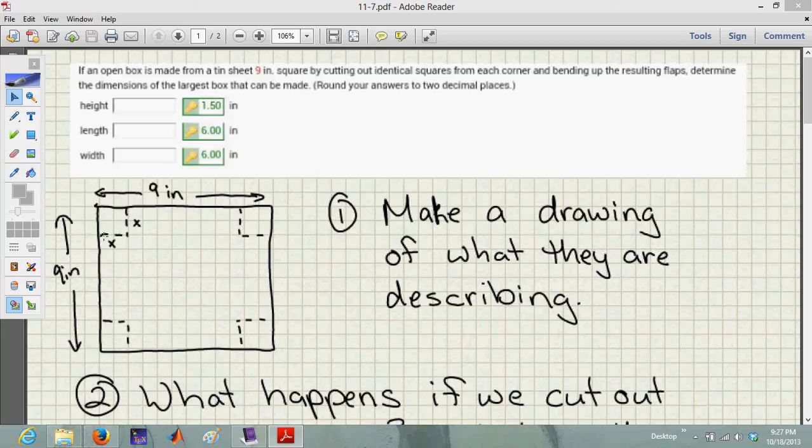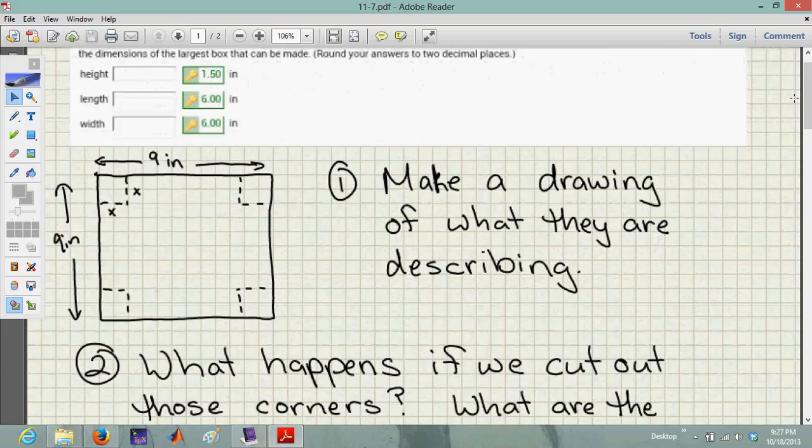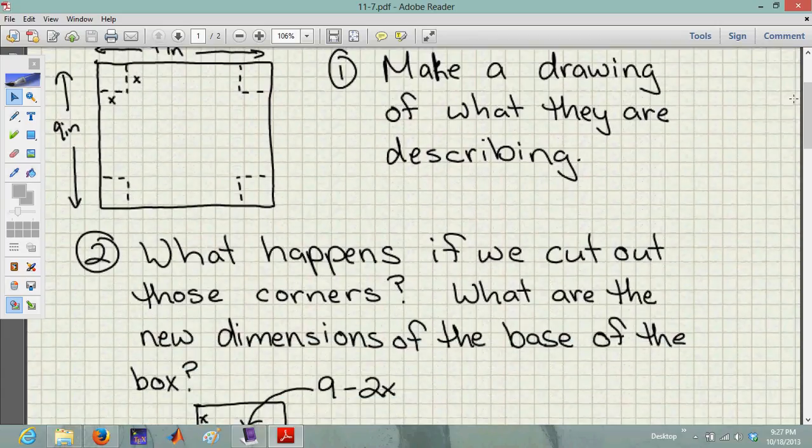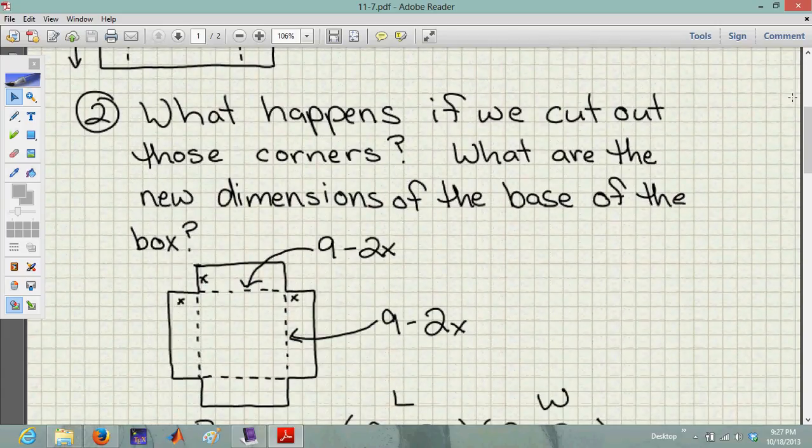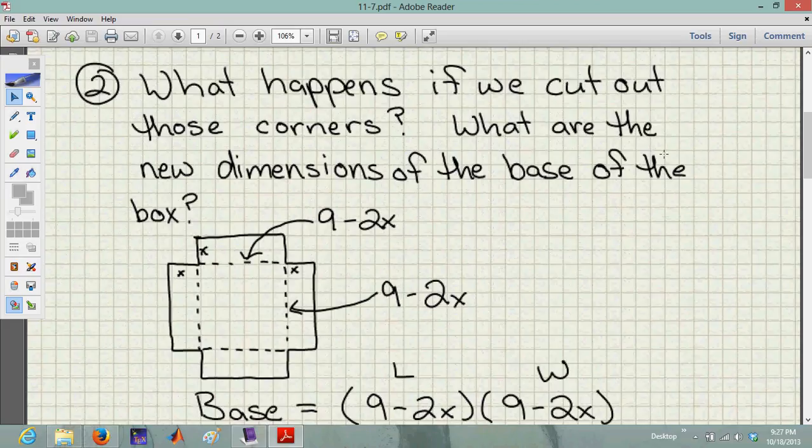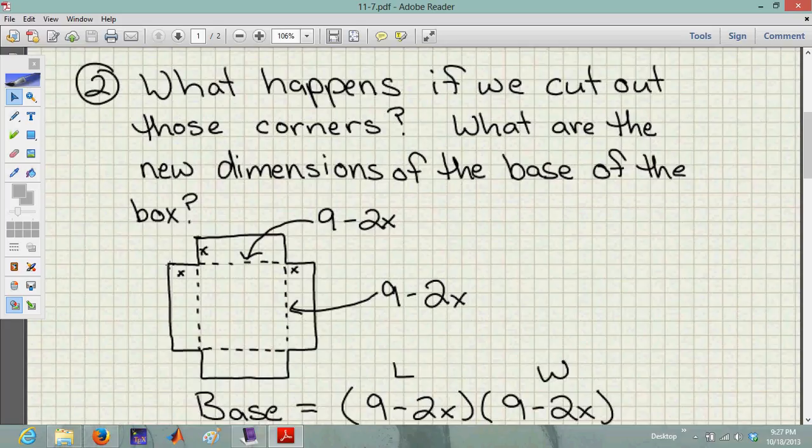Since we don't know how big they are, we'll just say that they're x. So if I cut an x by x square out of one corner, I have to cut that same x by x square out of all the other corners. So let's take a look at what happens if we cut out the corners. And if we draw the right picture, we're going to figure out what the dimensions of the base of our box are.